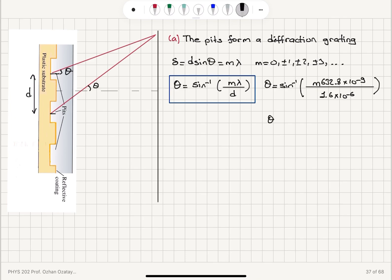So this gives us, for the angular position, theta equals sin inverse 0.3955 M.